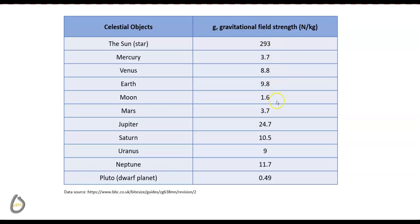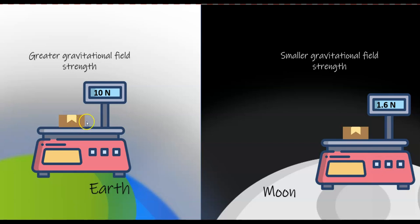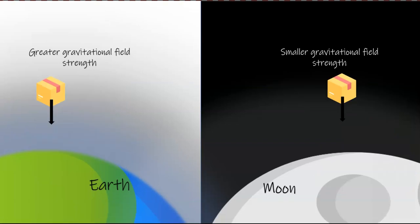Different planets have different gravitational field strengths. Earth has a gravitational field strength of 9.8 Newton per kilogram, whereas the Moon has a gravitational field strength of only 1.6 Newton per kilogram. This means that an object will weigh heavier on Earth than on the Moon. In addition, objects will fall faster on Earth than on the Moon.